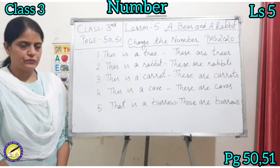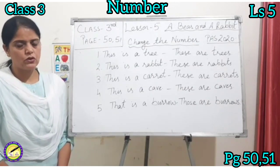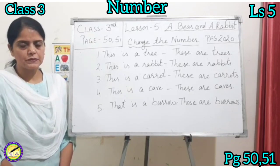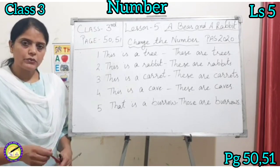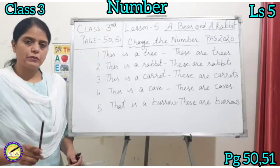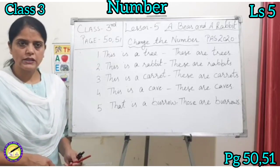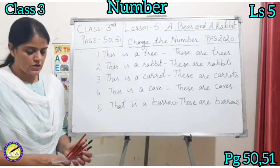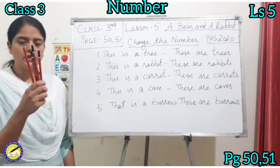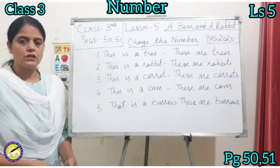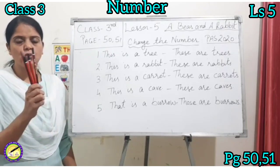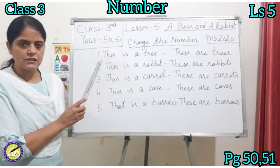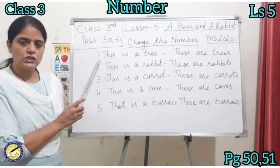On page number 50, there is a concept of changing the number. I will tell you what is the concept of changing the number. Changing the number is like we do in Punjabi — Ekwachan and Bahuvachan. For one thing, we use 'this is the pencil,' and if there are more than one things, we write 'these are the pencils.' So: 'this' for one thing, 'these' for more than one thing. On page number 50 and 51, there are sentences of which we are to change the number.